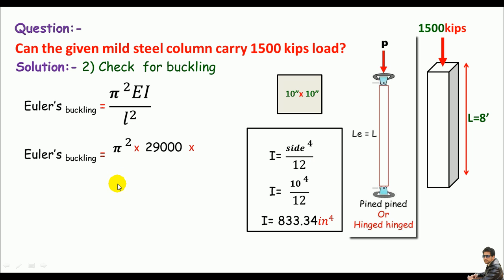Now the L is a little challenging. Which length should I plug in this equation? This L represents the effective length. If you see both ends of our column are pinned or hinged, so the effective length will be equal to the original length, which means 8 feet as a length can be used for effective length.